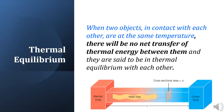When two objects in contact with each other are at the same temperature, there will be no net transfer of thermal energy between them, and they are said to be in thermal equilibrium with each other.